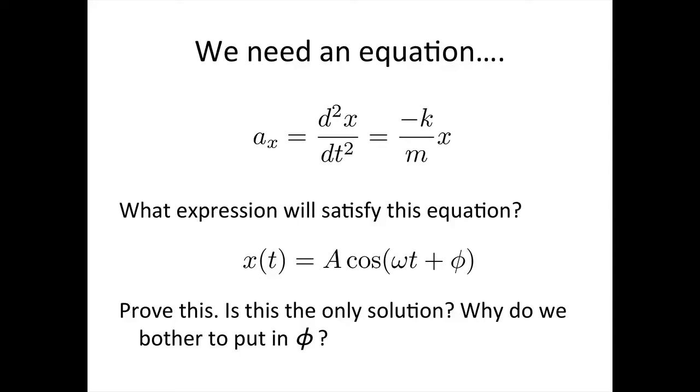So we now need an equation to describe the displacement of the particle or any particle undergoing simple harmonic motion. We've just said that the acceleration, when a body's undergoing simple harmonic motion, is given by minus k over m times x. And we already know that acceleration is just the second derivative of the displacement.